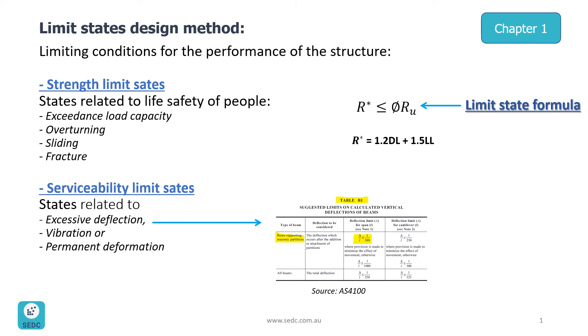So what is the formula for limit state design? You can see here the general formula which is R star equal to or less than phi Ru. R star is the design load taken from load combinations as per AS1170. One example is shown here for dead load and live load for this load combination. As you can see, dead load has been increased by a factor of 1.2 and live load has been increased by the factor of 1.5.